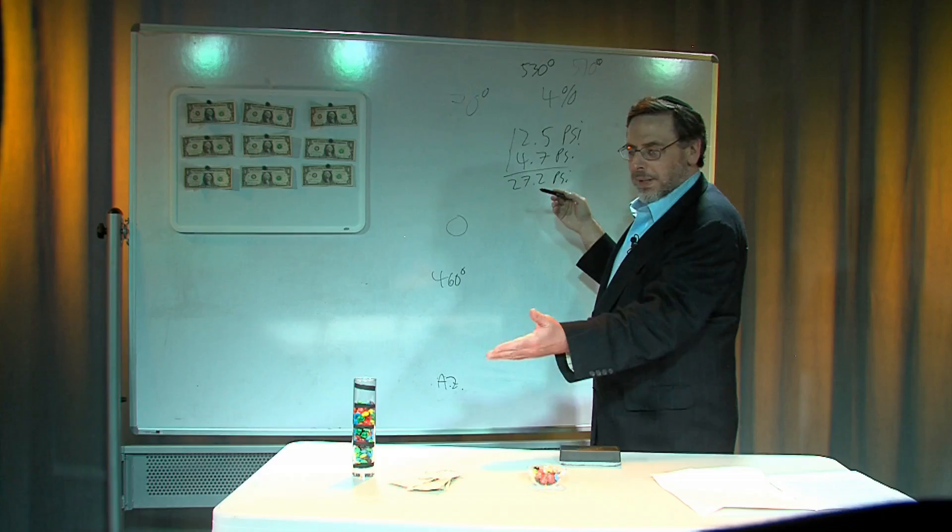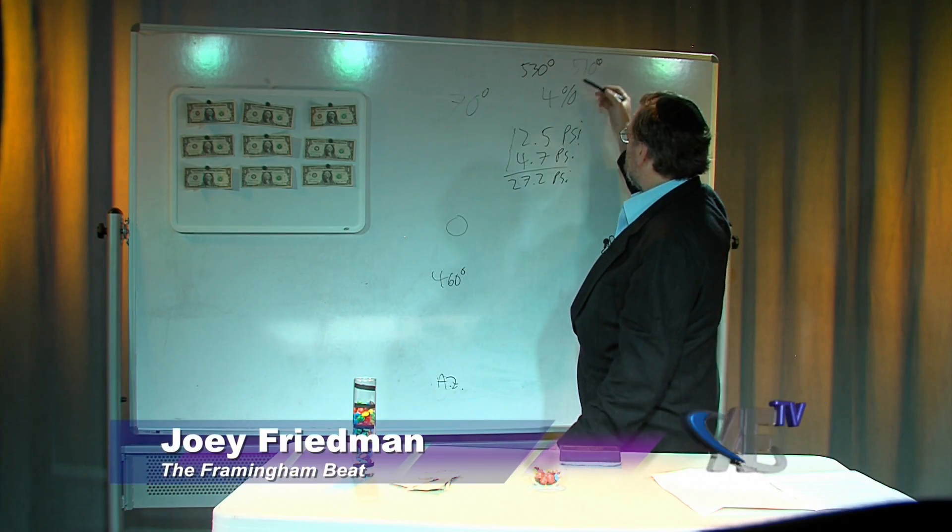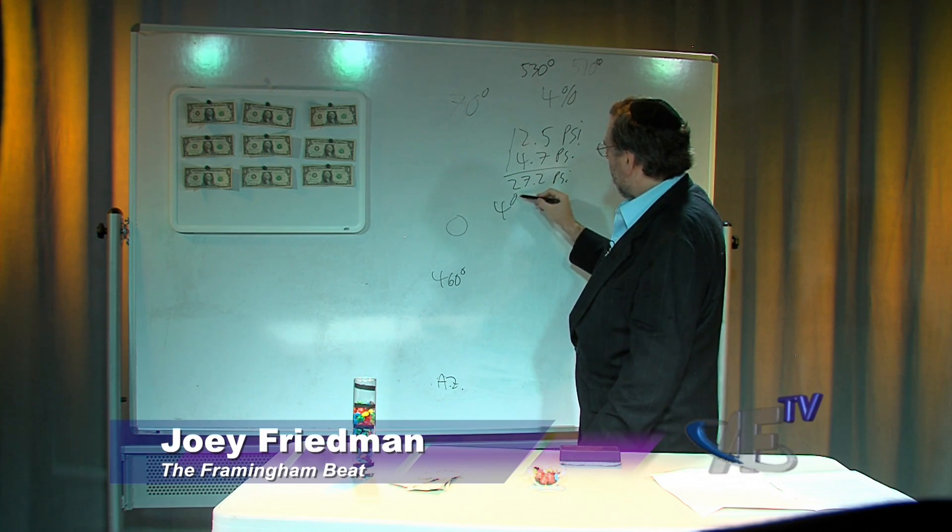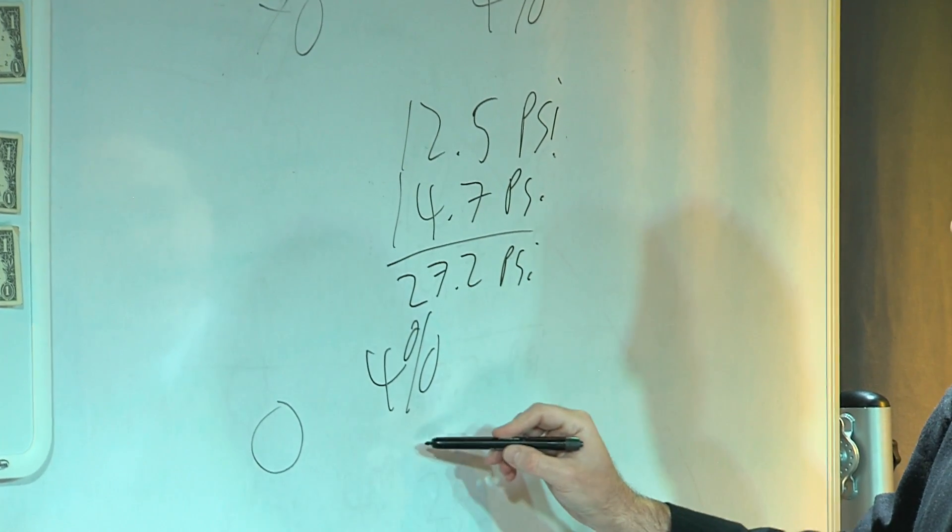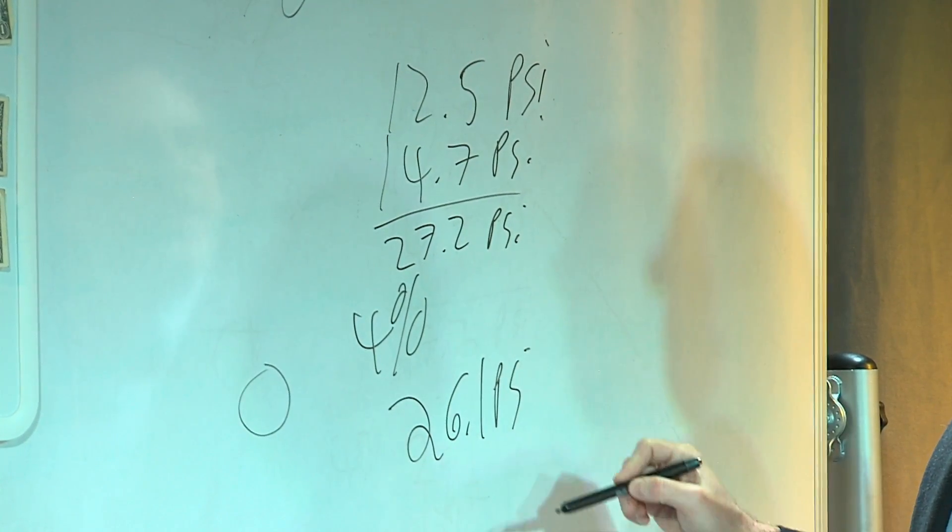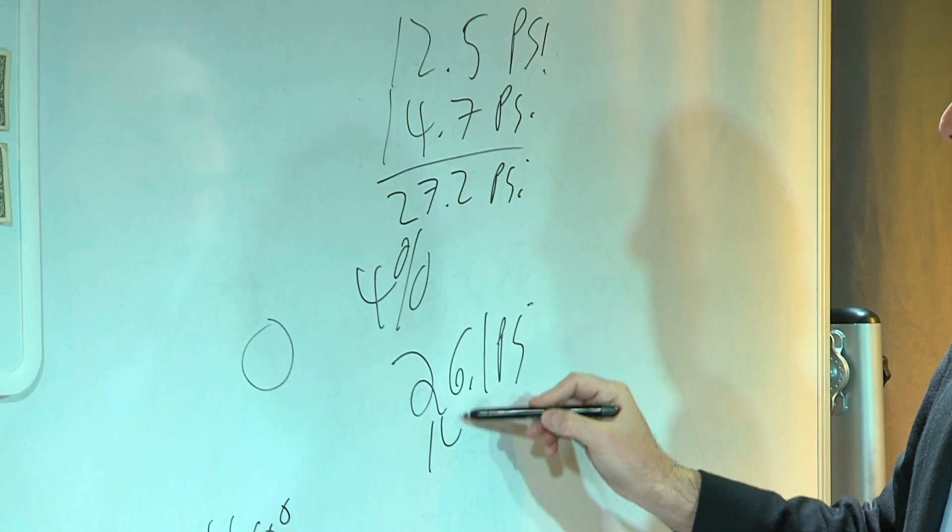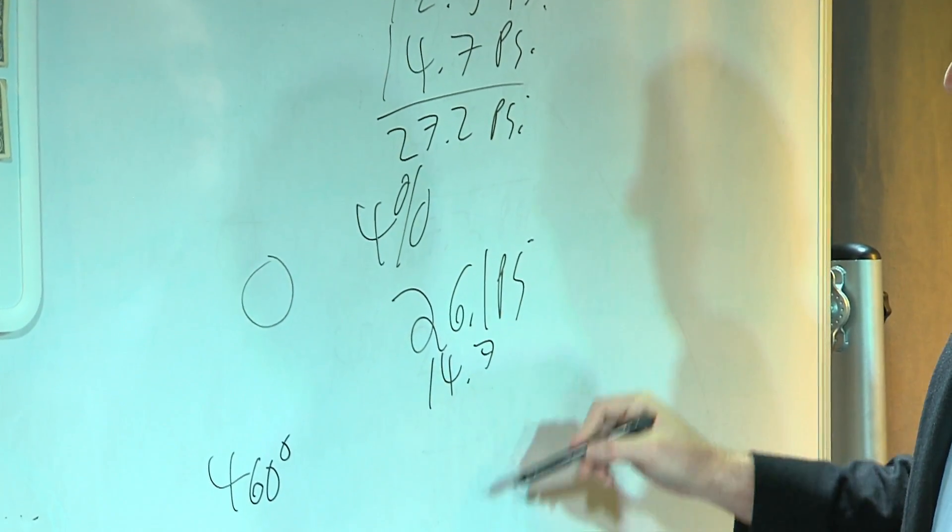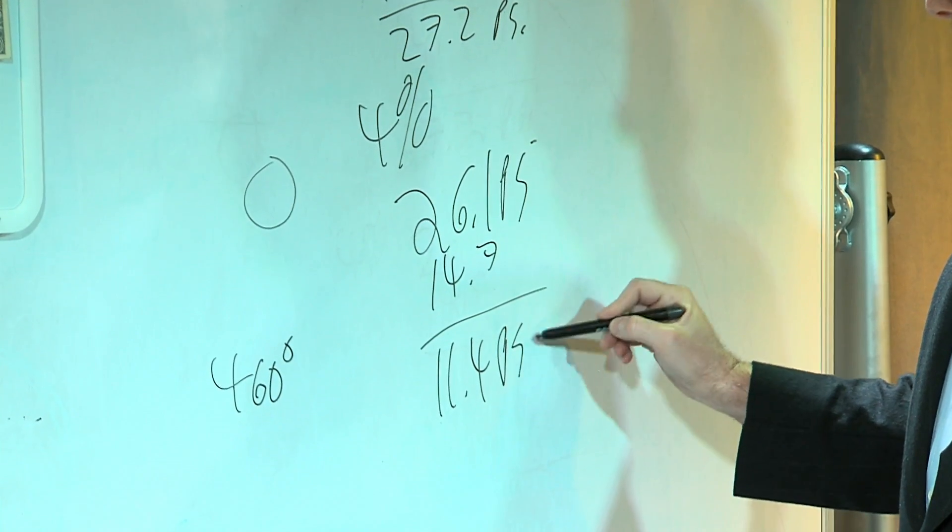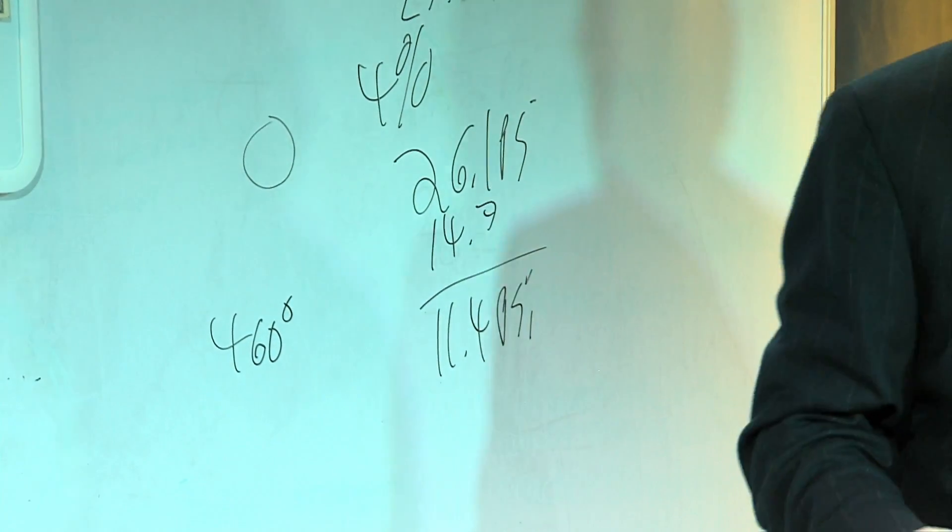4% drop, just like we had with the candy. We take a 4% drop in the temperature, gives us a 4% drop in the psi, which you can take my word for it or calculate yourself, is 26.1 psi. Then we have to take off the atmospheric pressure, and that gives us 11.4 psi inside the football during halftime predicted.